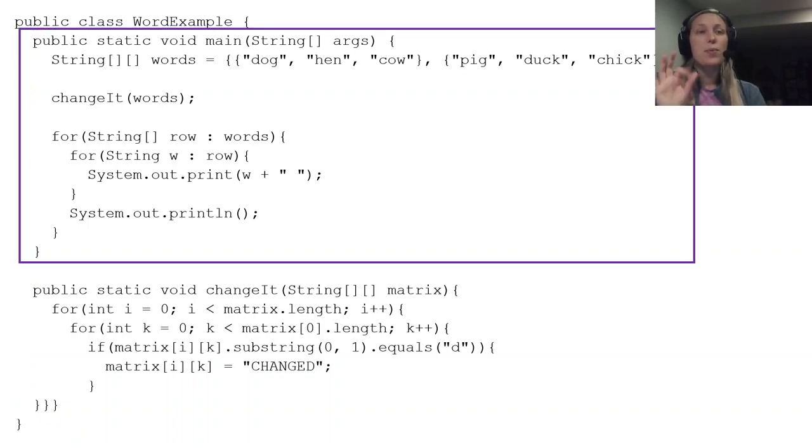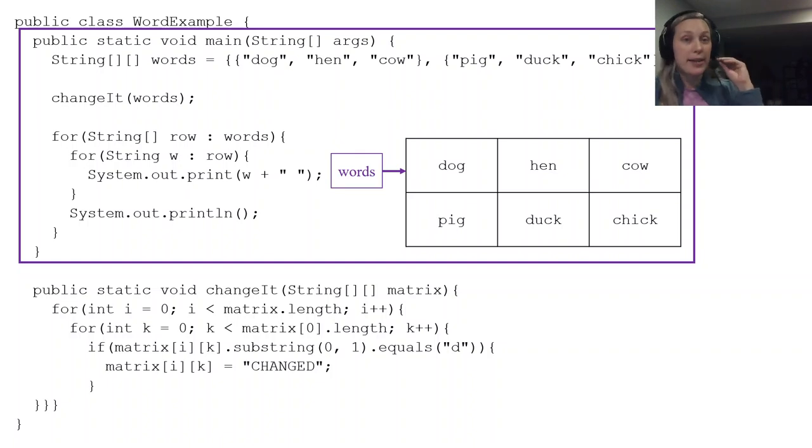Let's go through. We obviously always start with the main method. I have an array of strings called words, so I'm going to make that what that looks like in memory. Remember words is a reference, so that means that words contains a memory address that basically points to the location of the actual data itself.